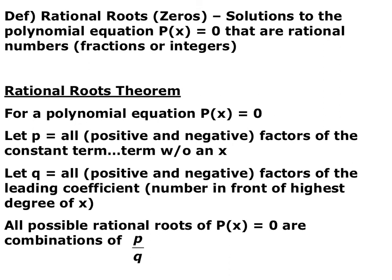In order to find possible real zeros, we use the rational roots theorem. Rational roots are all zeros that can be written as a rational number. We find possible rational zeros using p's and q's: p is all the positive and negative factors of the constant term — I think of p as a period, it comes at the end of the sentence, so it's the term at the very end of the polynomial. q is all the positive and negative factors of the leading coefficient. Your possible zeros are all p's divided by all q's.